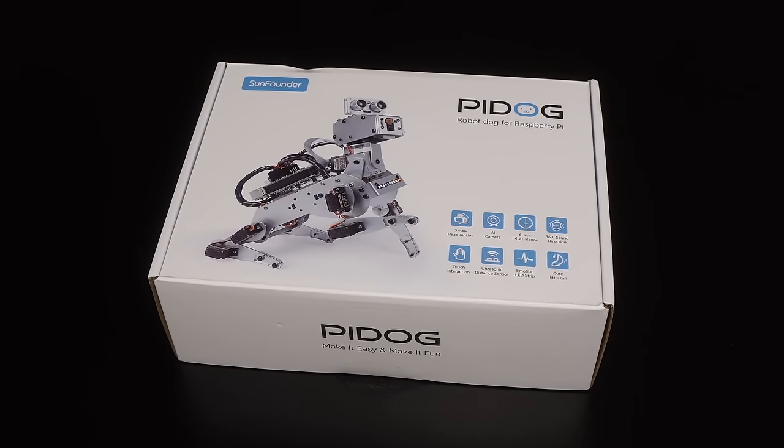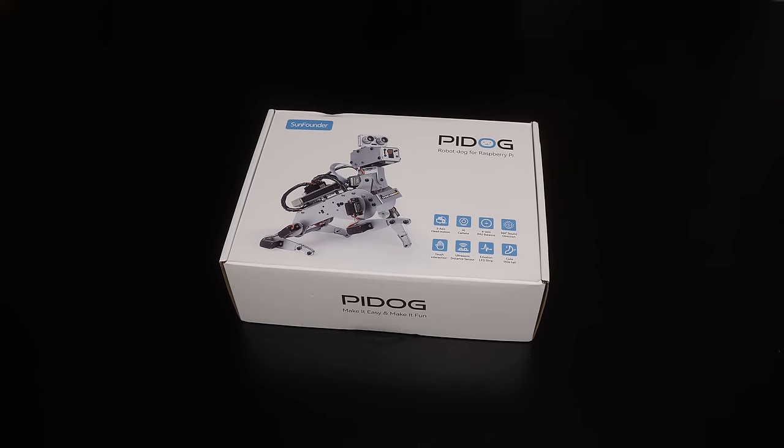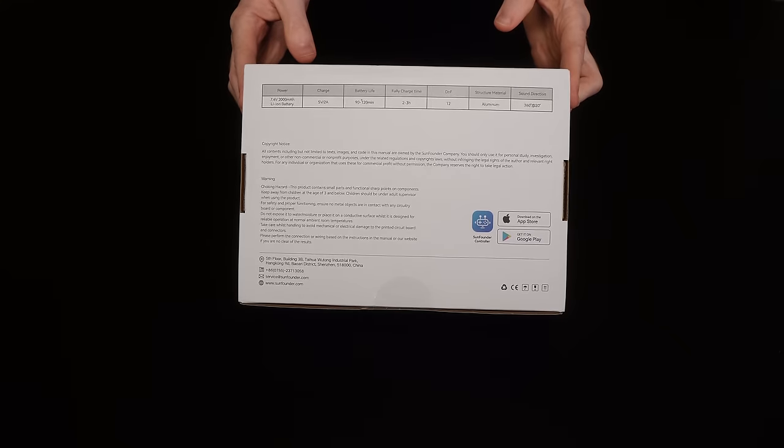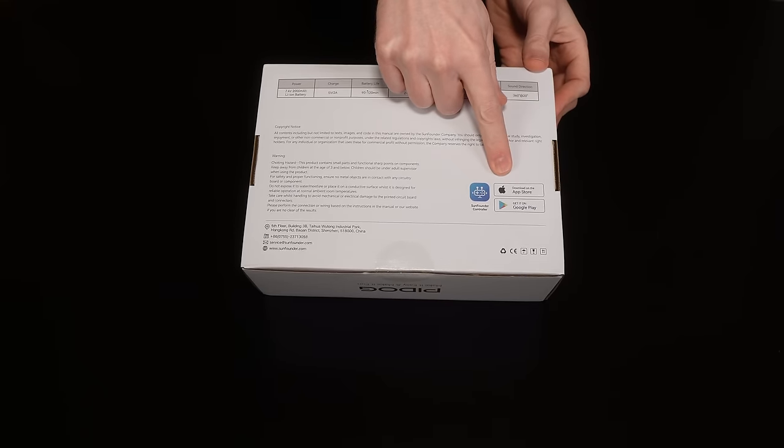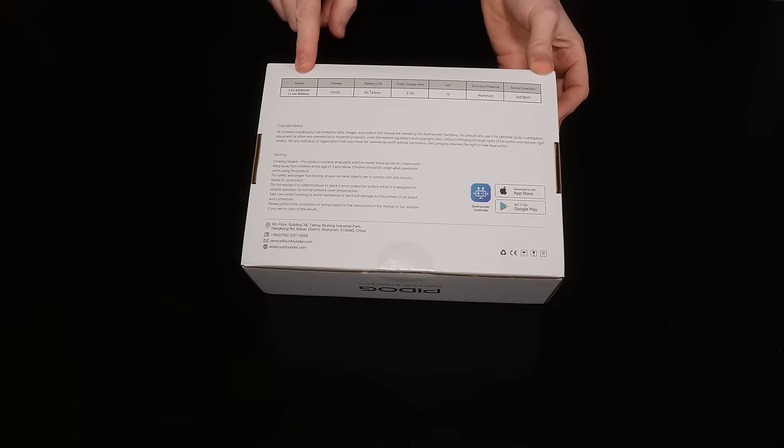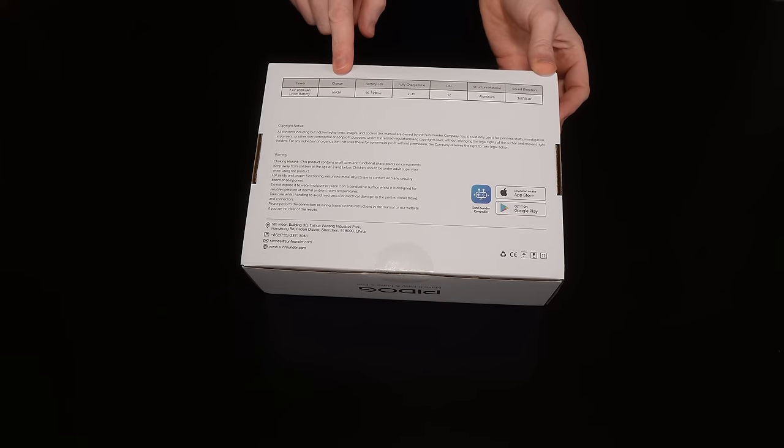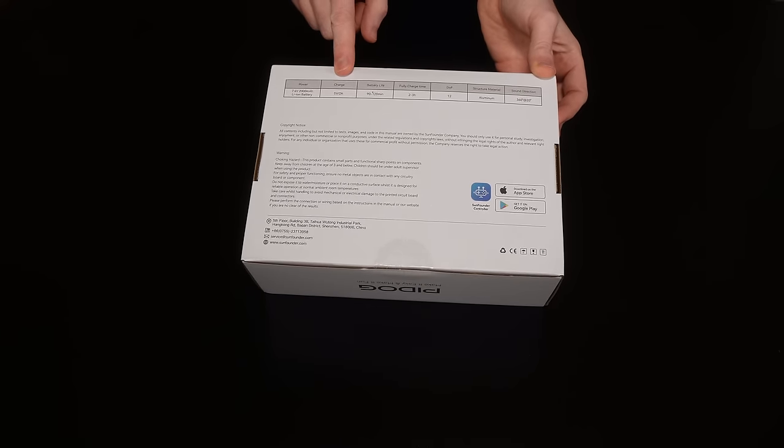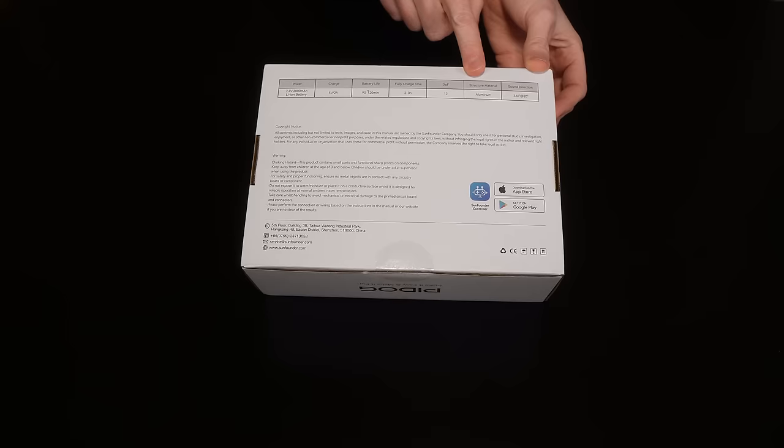Of course this is a kit, so step 1 is to build the thing. And to build the thing, first we need to unbox the thing. As you can see from the box, there's also some kind of app available for Apple and Android devices, so we'll need to check that out too. And we can see that it comes with a 7.4V, 2000mAh battery, for a claimed 90 to 120 minutes of battery life. And that requires a 5V 2A charger, which isn't included, and also comes with a bit of a caveat which I'll soon discover. Oh, and it's made of aluminium, so that's nice.